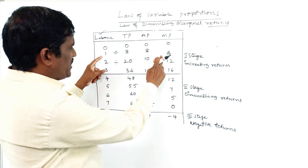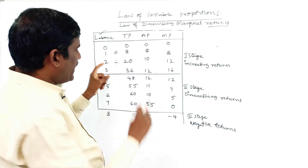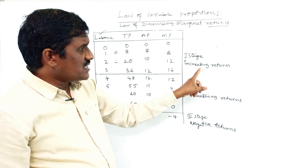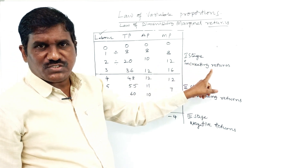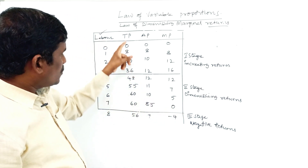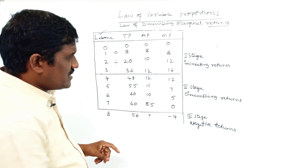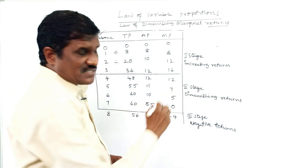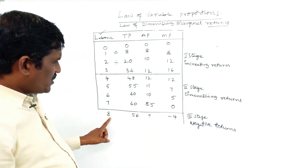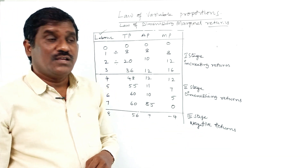In the first stage it is preferable because when we enter the first stage the returns are increasing — it is the first stage of increasing returns. When the number of labor increases we get the diminishing returns, and when we go to the third stage we get the negative returns.